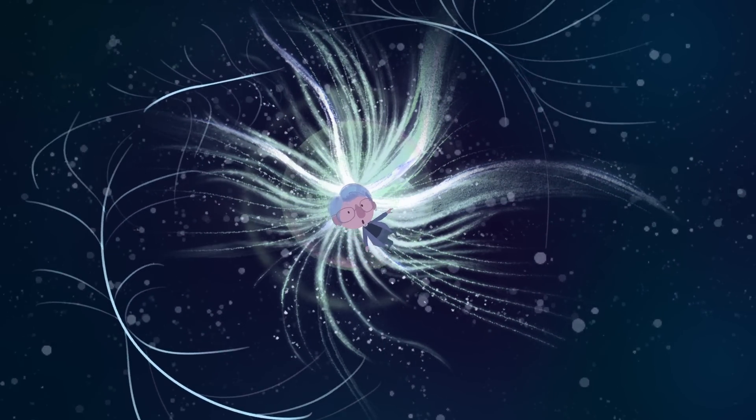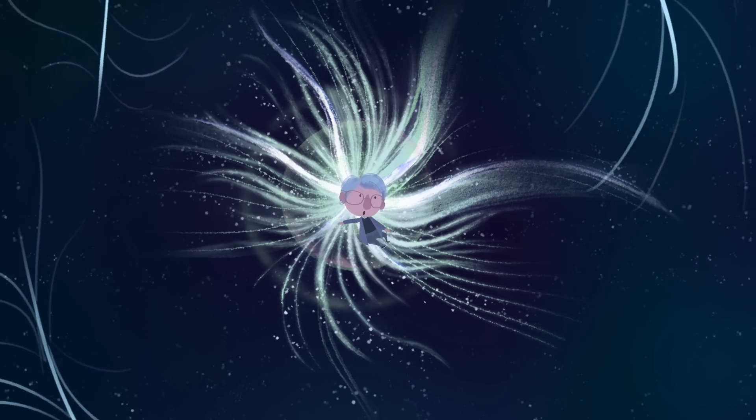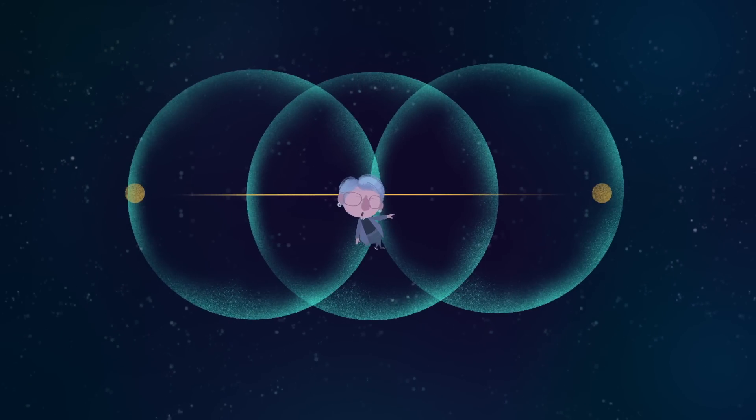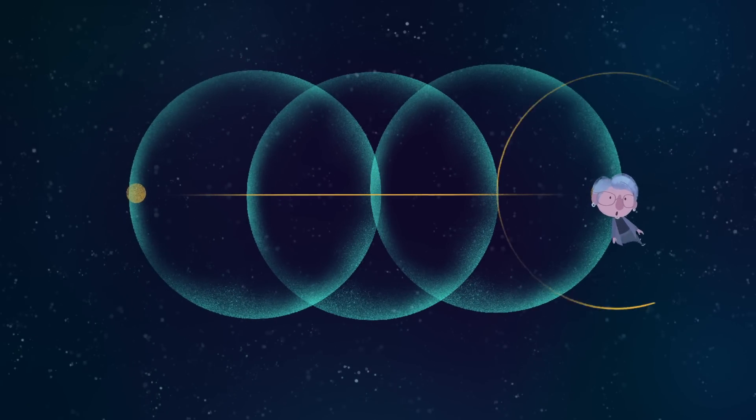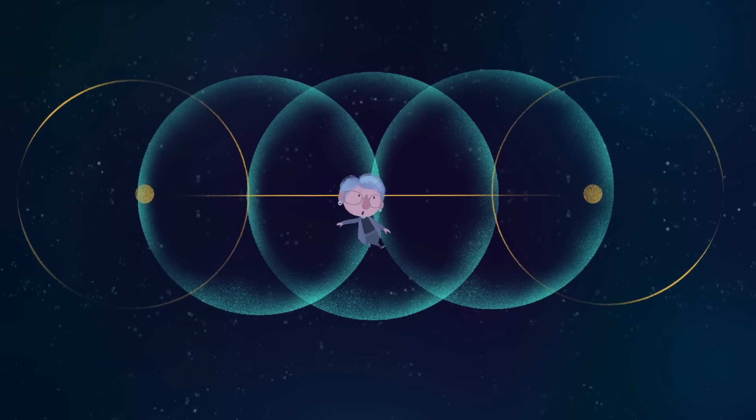The Laniakea supercluster is, you guessed it, moving with respect to everything else in the universe. At every step thus far, your granddaughter has used central reference points to describe your relative motion. But the universe has no center.